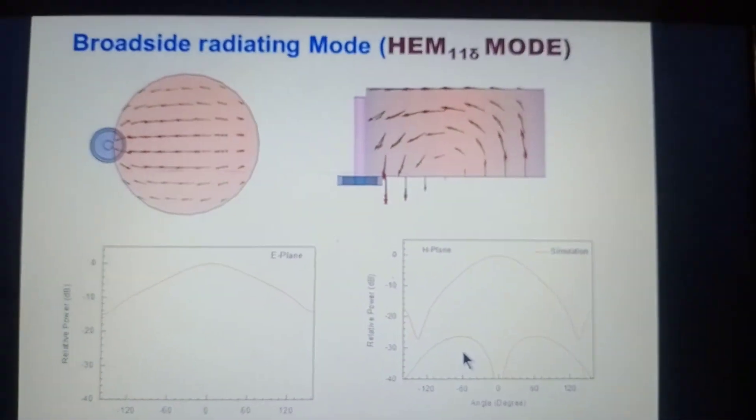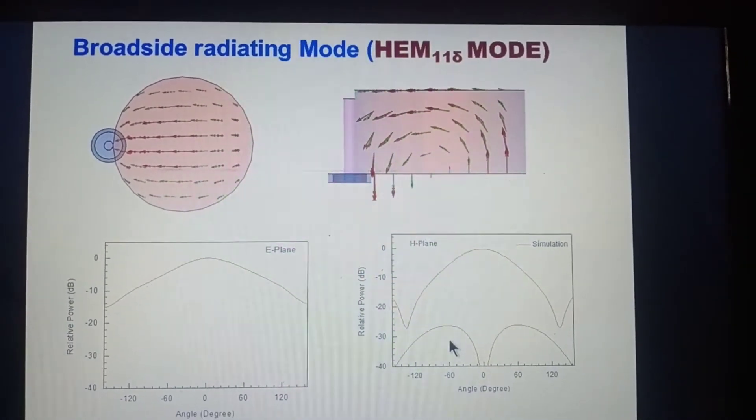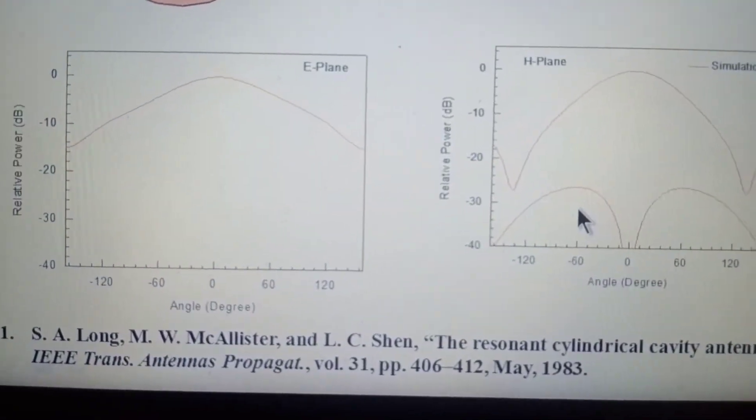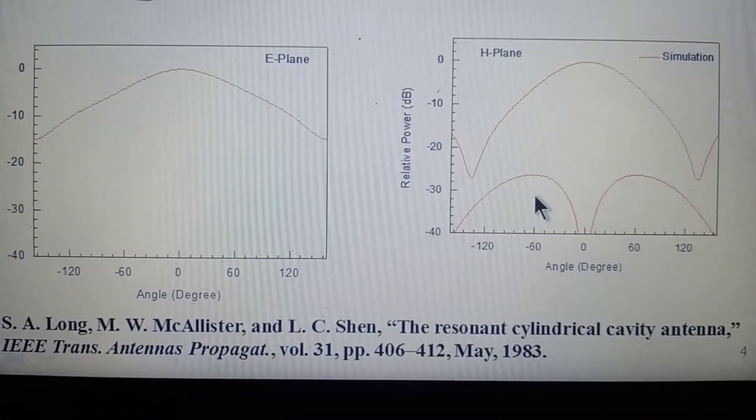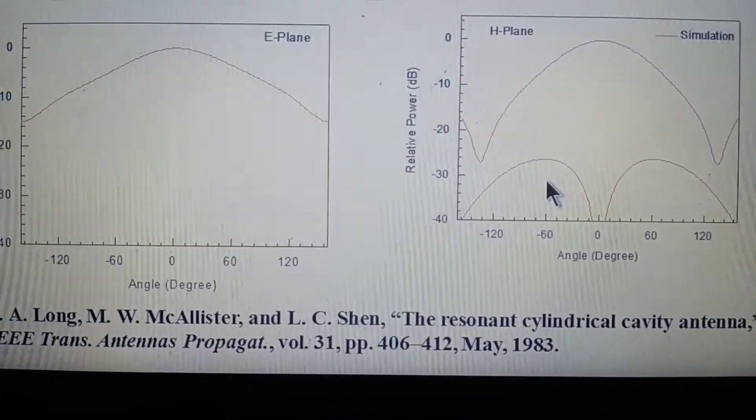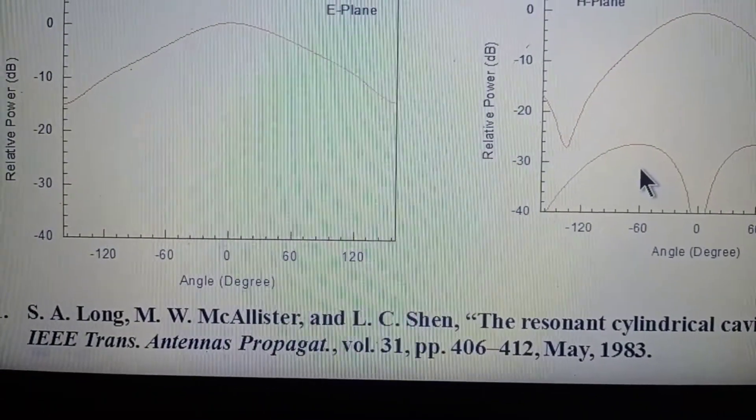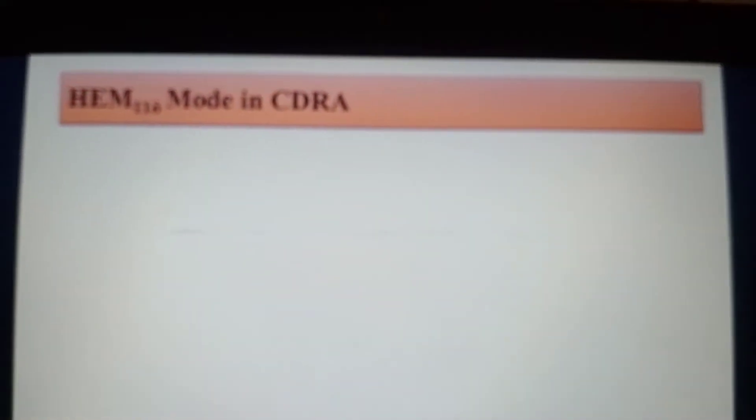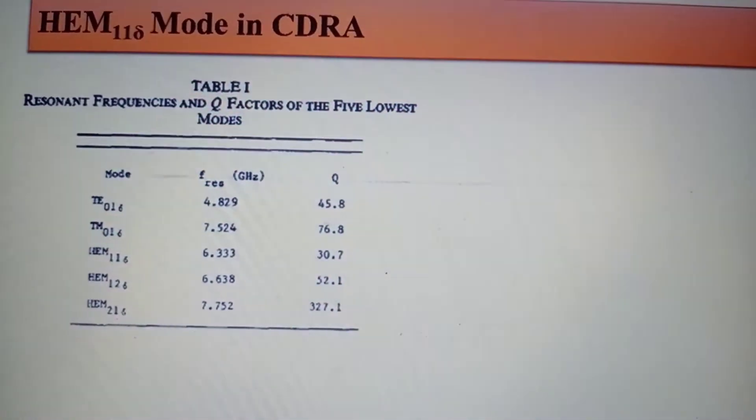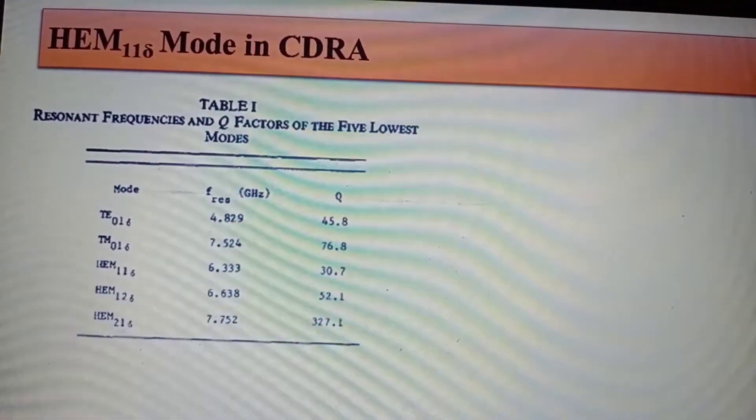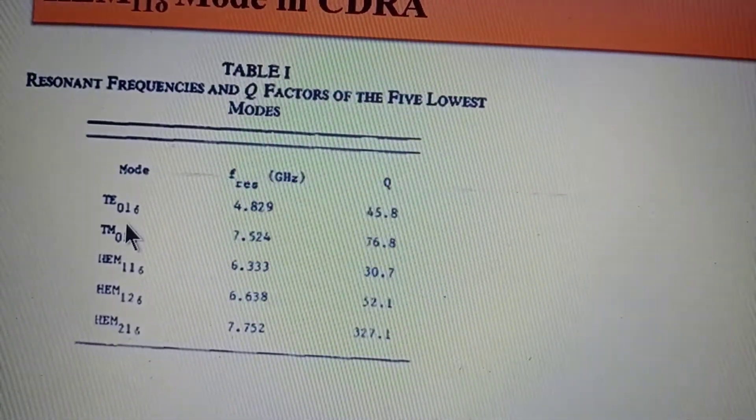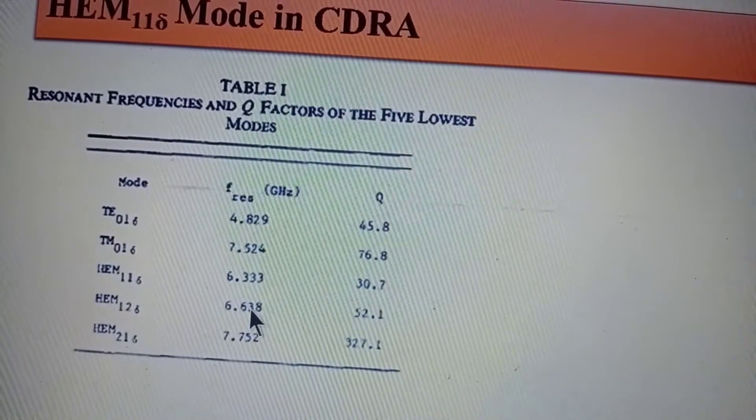This is the nature of HEM11 delta mode what we got in the simulation. You can find the isolated DRA and its mode, particularly the resonant cylindrical cavity antenna. And in this paper, Long in 1983 explains, and from that paper some more idea about HEM11 delta mode.